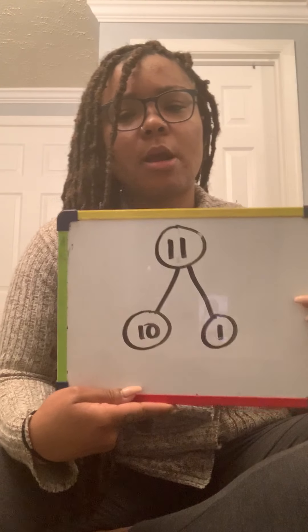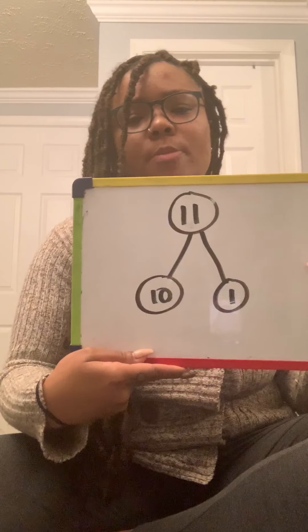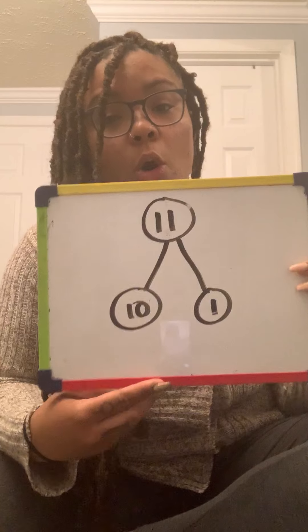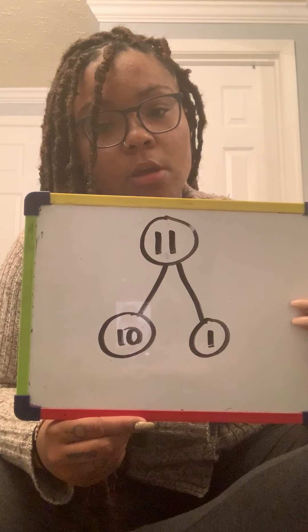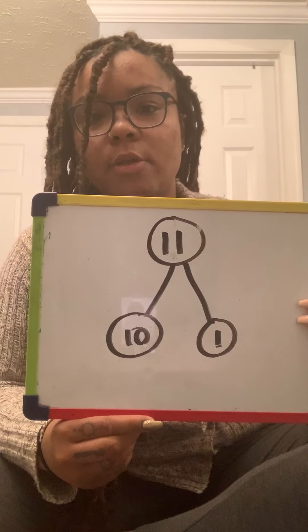Sometimes in a number bond, you may be given the whole and asked to find the parts. Other times, you may be given the parts and have to find the whole, or a combination of both. Sometimes you'll be given a whole and a part, and then you'll have to find the other part.